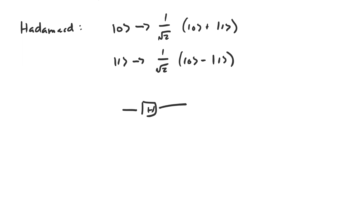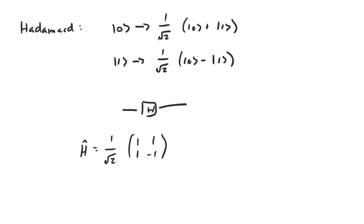The matrix corresponding to the Hadamard gate looks like this. One interesting property of the Hadamard gate is that it's its own inverse. So if you apply the Hadamard gate twice to a qubit, you don't change its state at all.